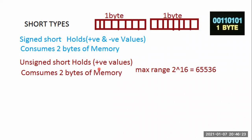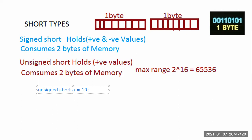By default, integer types take positive as well as negative values. For example, if I declare a variable like 'short a = 10', implicitly it will be understood as a signed type. If you want to declare it as unsigned, you must explicitly mention 'unsigned short a'. If it is signed, there is no need to mention it — by default it is implicitly a signed short.